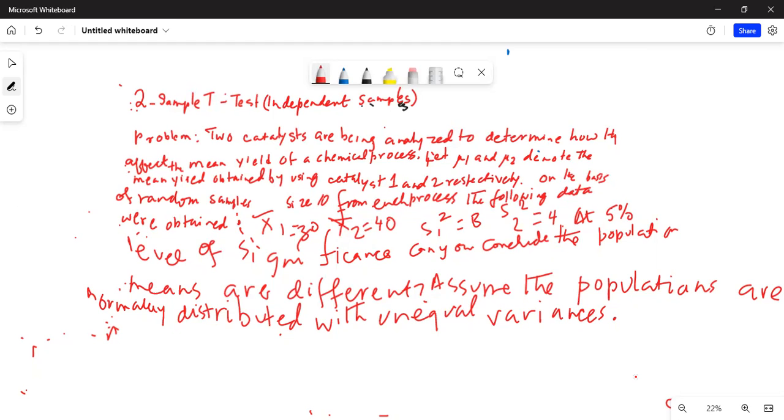At 5% level of significance, can you conclude the population means are different? Assume the populations are normally distributed with unequal variances.